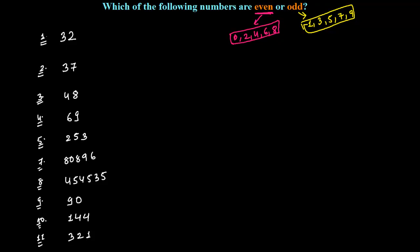For example, 24. The last digit is 4 and 4 is coming here. That's why 24 is an even number. Similarly, another number, suppose 39. The last digit is 9, and 9 is here. So that is why 39 is an odd number.